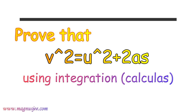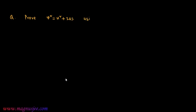We have to prove v² is equal to u² plus 2a·s. We will prove v² = u² + 2a·s using the concept of calculus, specifically by using integration.